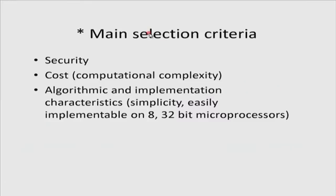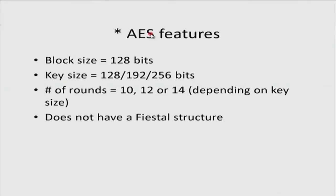The main selection criteria were: security — it had to be highly secure; cost in terms of computational complexity — encryption and decryption could not take too long; and algorithmic and implementation characteristics — it should be simple to implement in code, whether in assembly language for 8-bit, 32-bit, or 64-bit microprocessors, or in hardware. There was also the criterion of flexibility: supporting multiple block sizes and key sizes. The block size is 128 bits, but can be increased. The key size could be 128, 192, or 256 bits. The number of rounds is 10, 12, or 14, depending on whether the key size is 128, 192, or 256 bits respectively. AES does not have the Feistel structure that DES had.